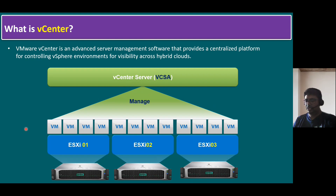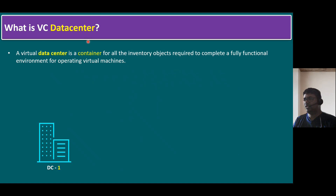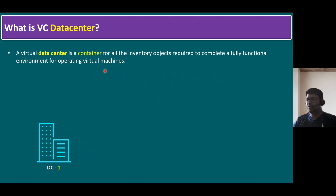The next point is: what is a vCenter data center? A virtual data center is a container for all inventory objects. Inventory objects means ESXi hosts, virtual machines, networking objects, storage objects, and so on — everything required to complete a fully functional environment and operate virtual machines. The data center logical icon is the same as our physical data center icon, and even within our vCenter, we can see the same icon.